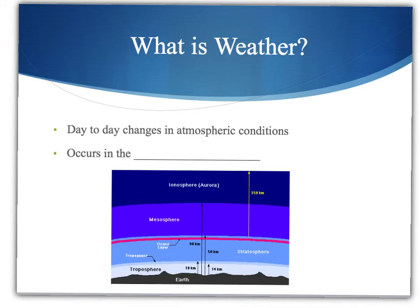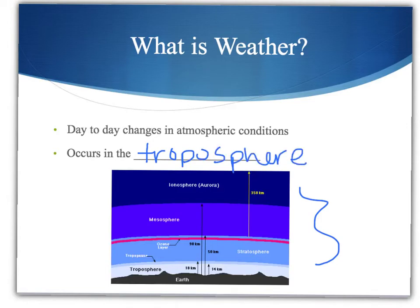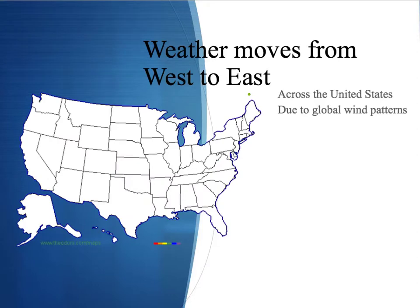From our past unit, we know that all weather occurs in the troposphere. Another important aspect of weather, especially here in the United States, is that it moves from the west coast to the east coast — and that's due to the global wind pattern, which we'll be talking about in our next unit.